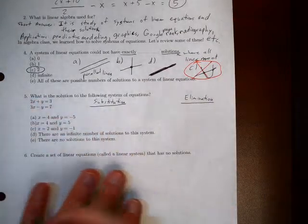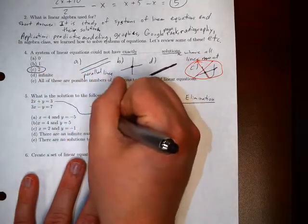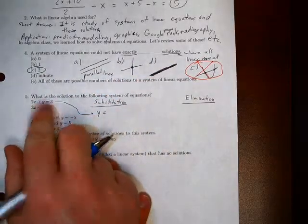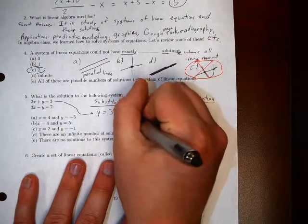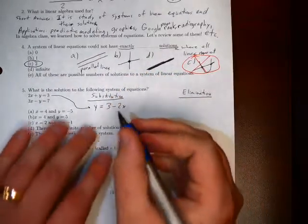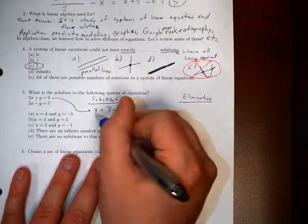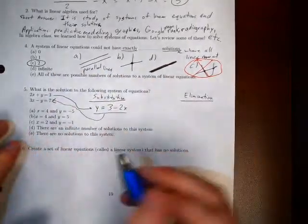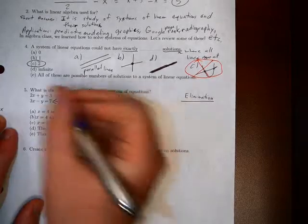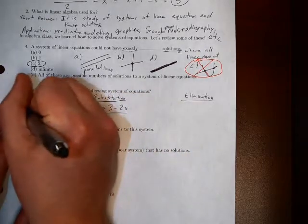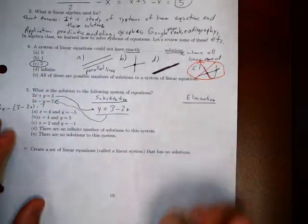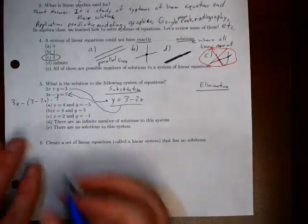So two methods you've probably learned in high school to solve these equations. So here what we can do for substitution is we can take one of our equations and solve for one of our variables. So y equals 3 minus 2x. Now what we can do is plug that in to our other equation. So then we would get 3x minus 3 minus 2x equals 7. Okay, so let's say we've done that.